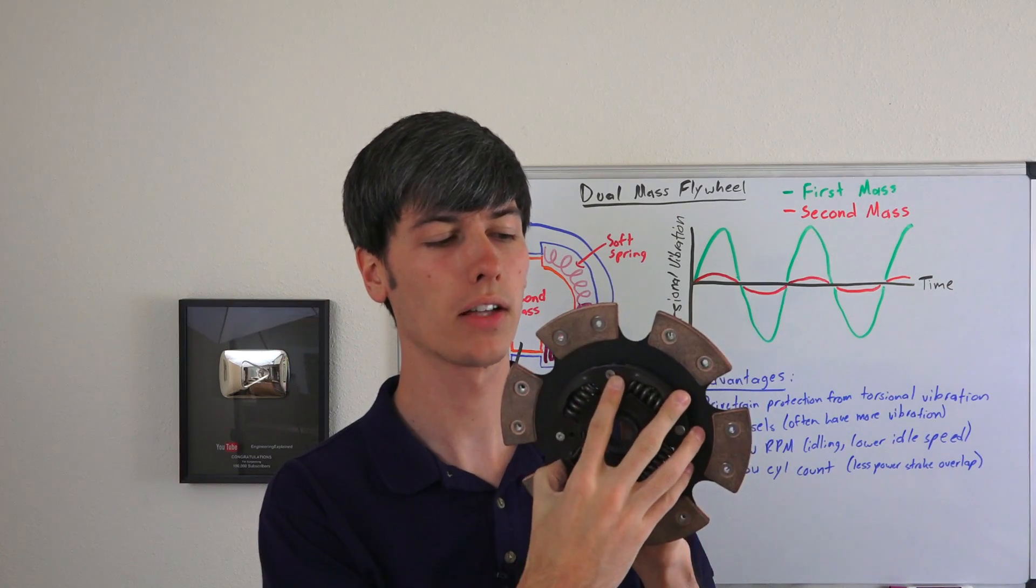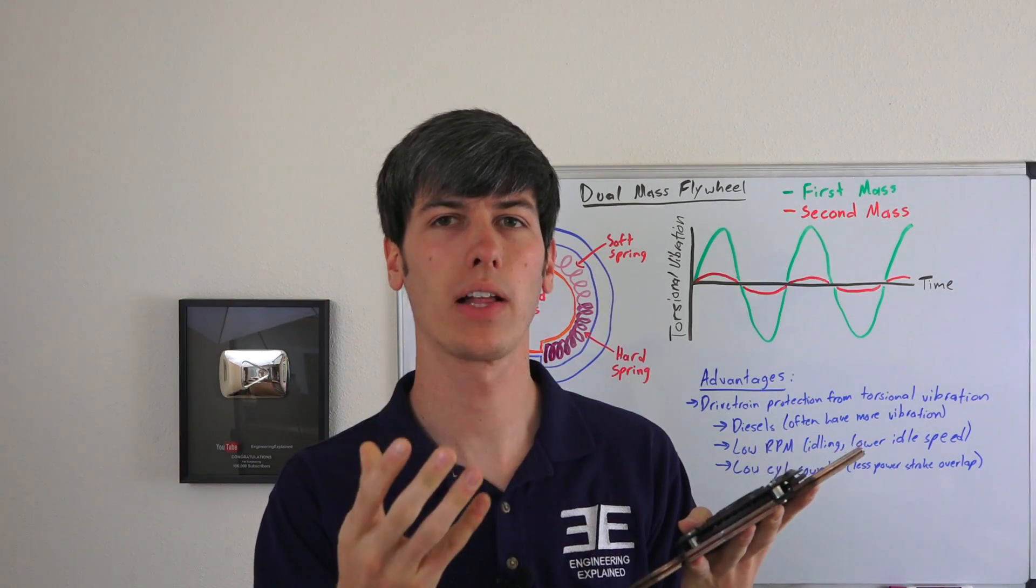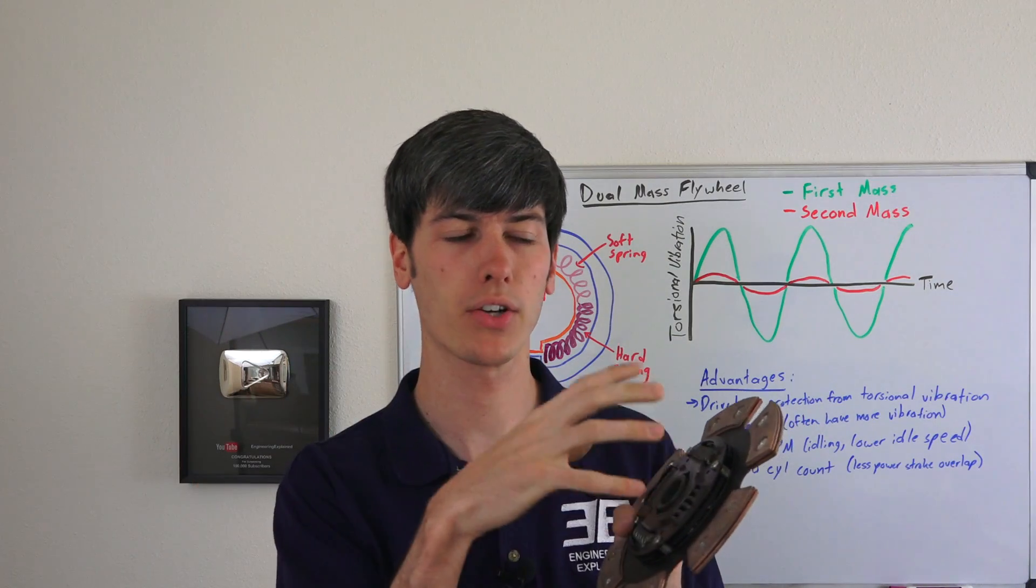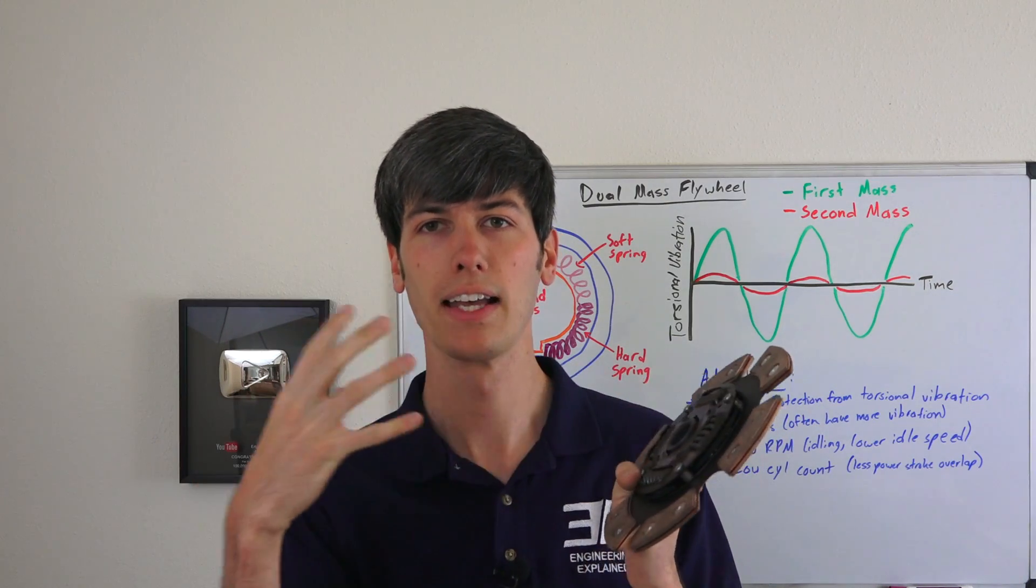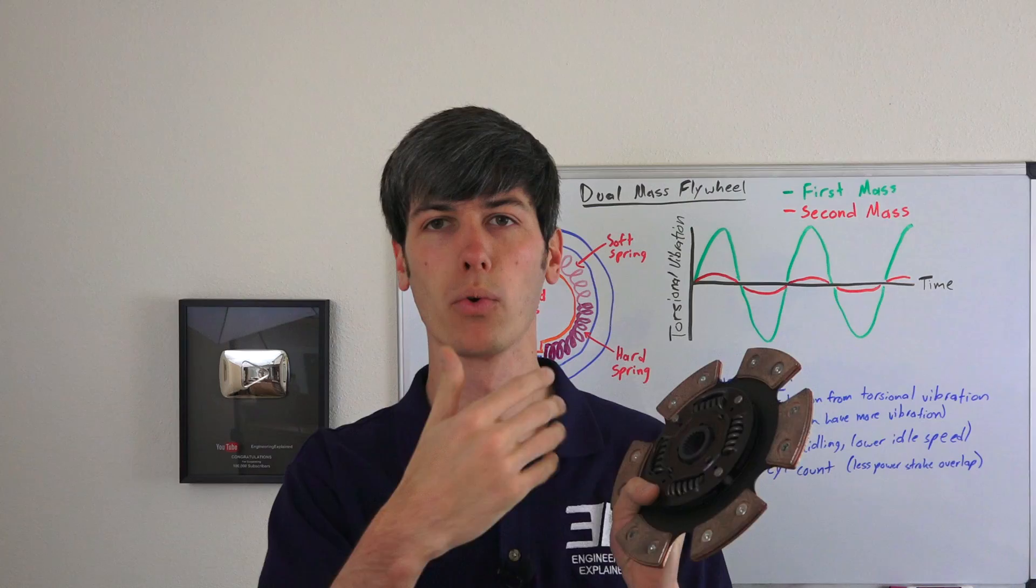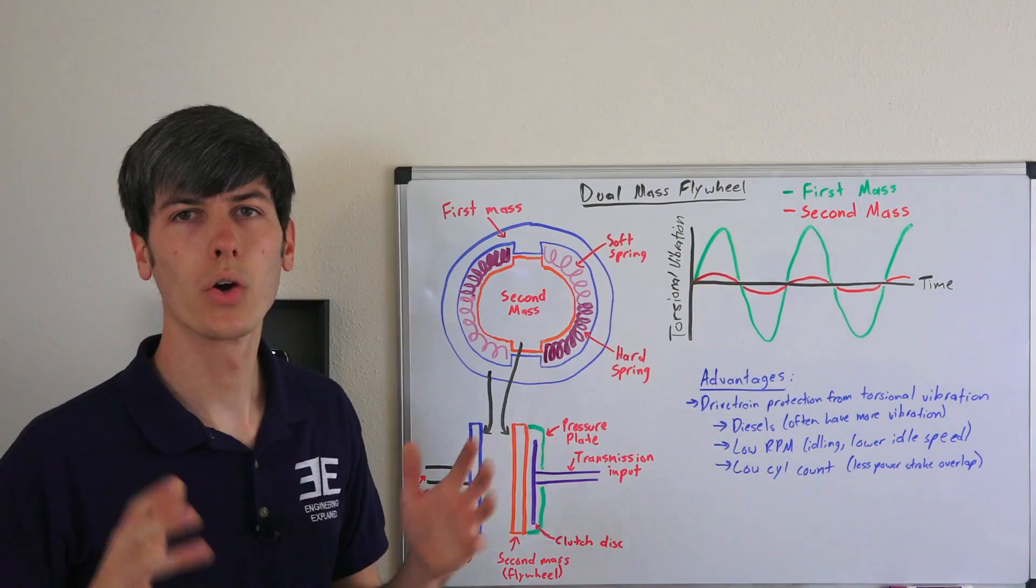Now where it's done on clutch discs, a dual mass flywheel does it earlier in the process so that vibration never actually gets to the clutch disc itself. It's actually within the flywheel before it reaches the transmission and that input shaft.